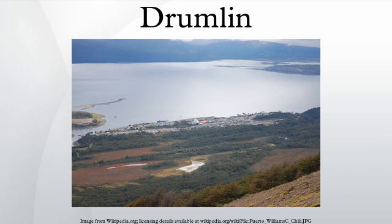In terms of geomorphology, a drumlin's long axis is parallel with the movement of the ice and is roughly symmetrical around the long axis. Drumlins are typically 1 to 2 kilometers long, less than 50 meters high, and between 300 to 600 meters wide. Drumlins generally have a consistent ratio of 2 to 3.5 width-to-length dimensions. Drumlins are often found in drumlin fields of similarly shaped, sized, and oriented hills. Drumlins usually have layers indicating that material was repeatedly added to a core, which may be of rock or glacial till.